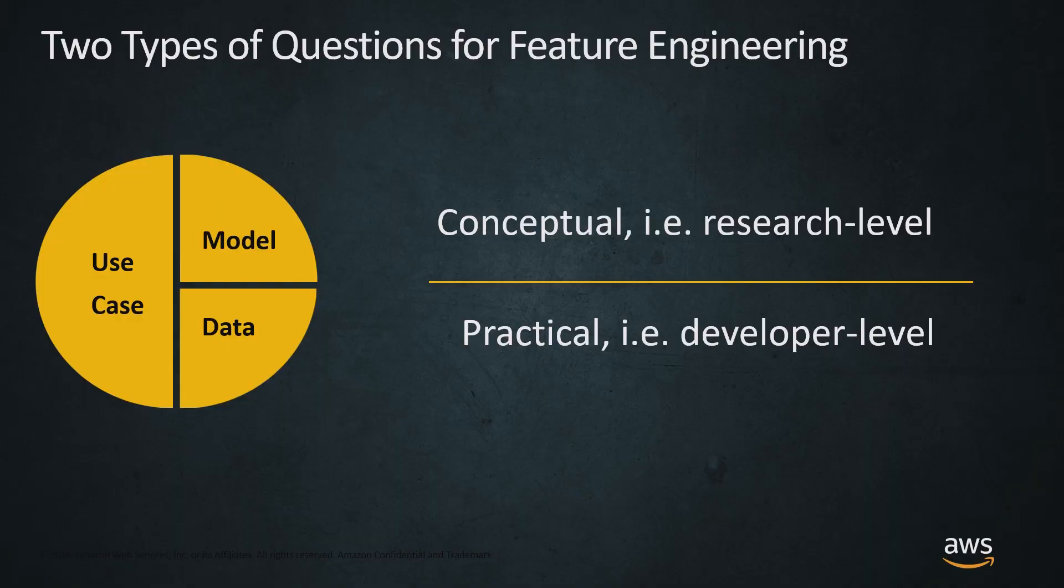There are two types of questions that we're going to think about in feature engineering. If we're using this pie chart as our hypothesis of what machine learning is - solving use cases using a data set and a model - one is more research level, conceptual questions like what's the best way to do this, why should I do this. We've also got practical or developer level questions: how do I literally transform that, how do I actually do this feature engineering?